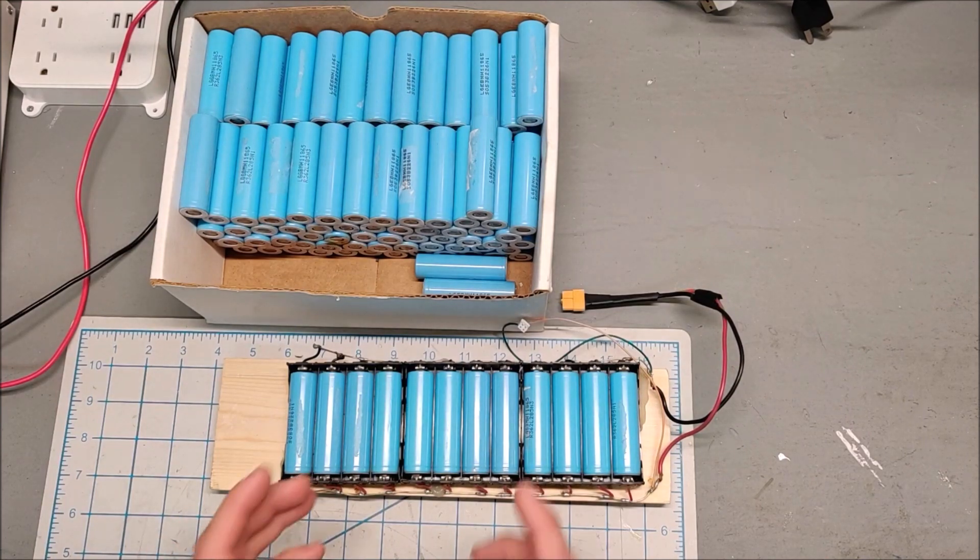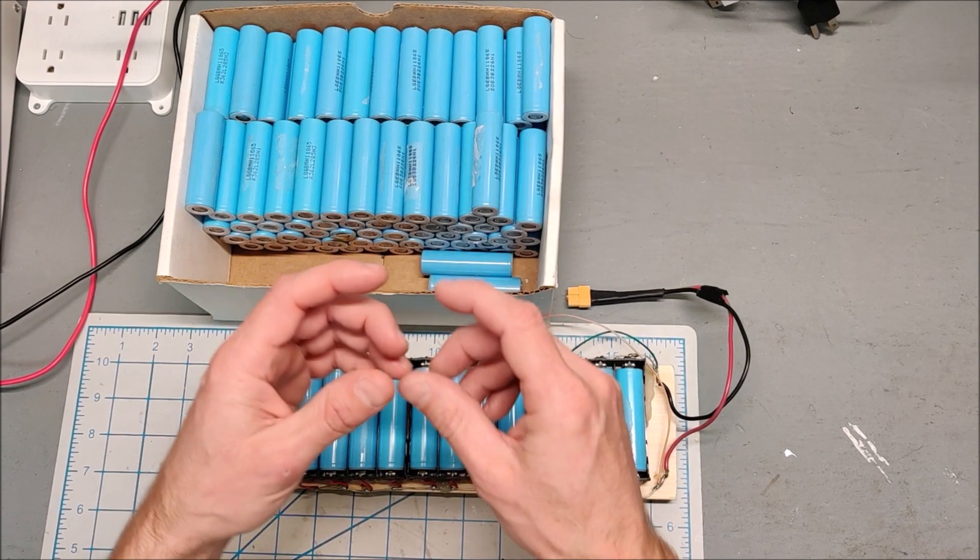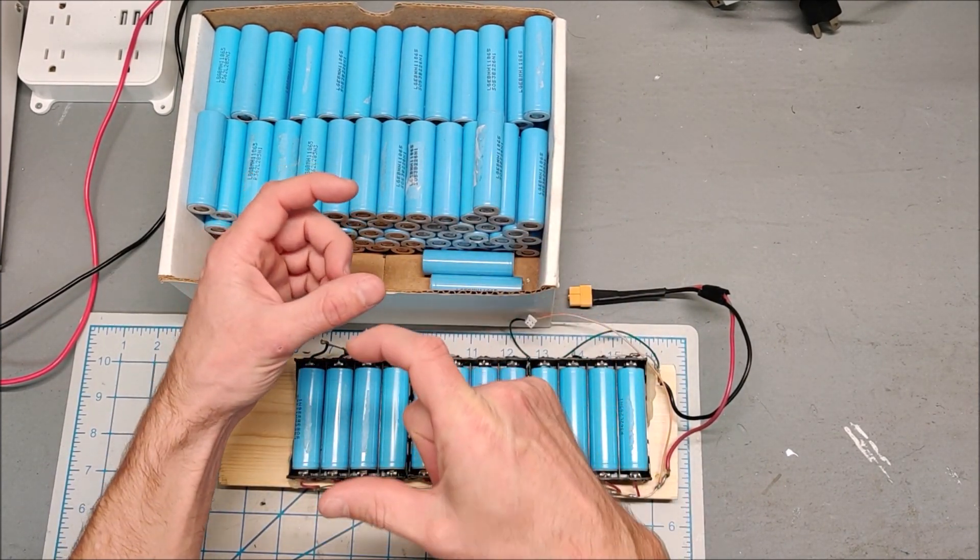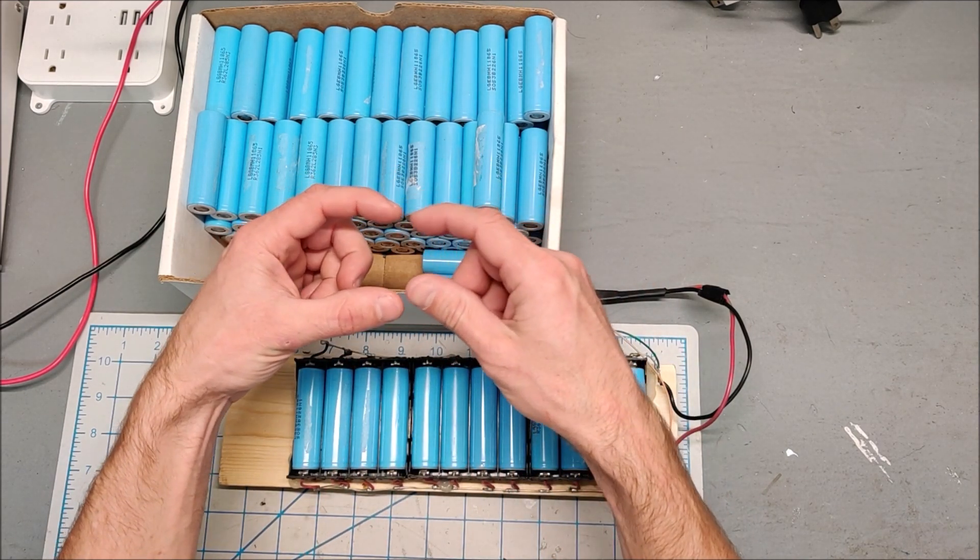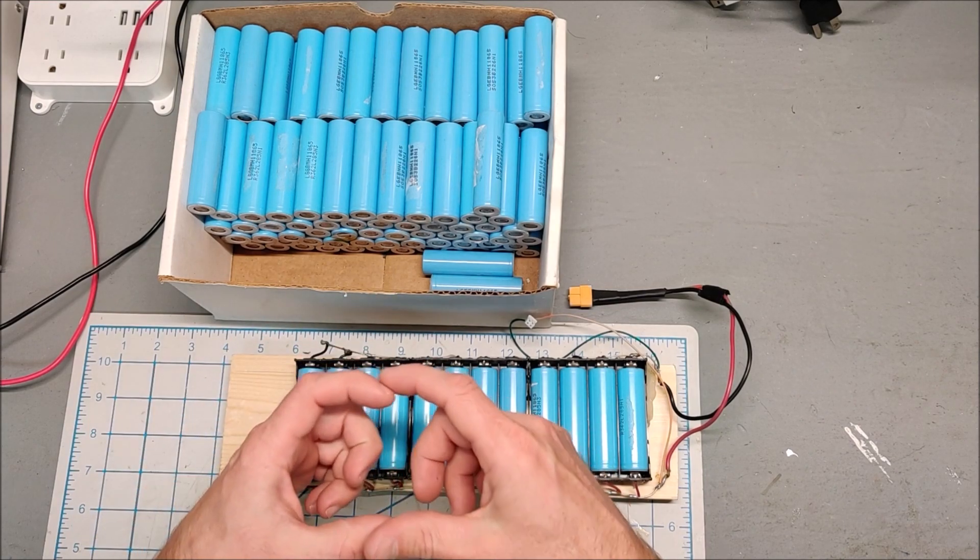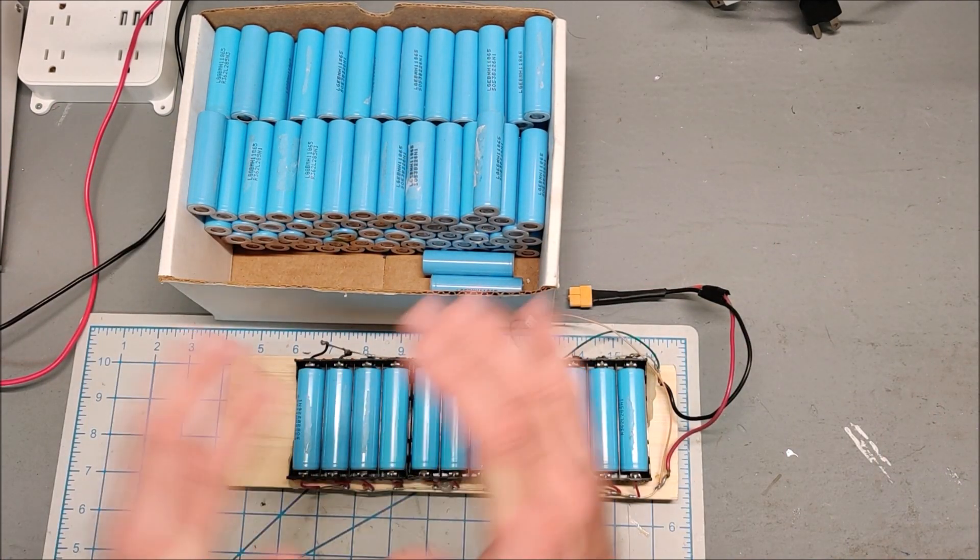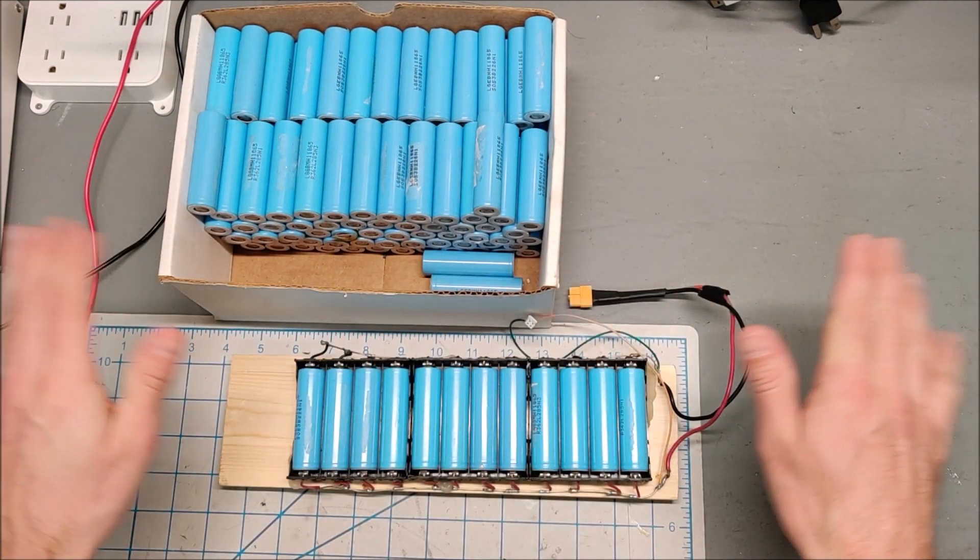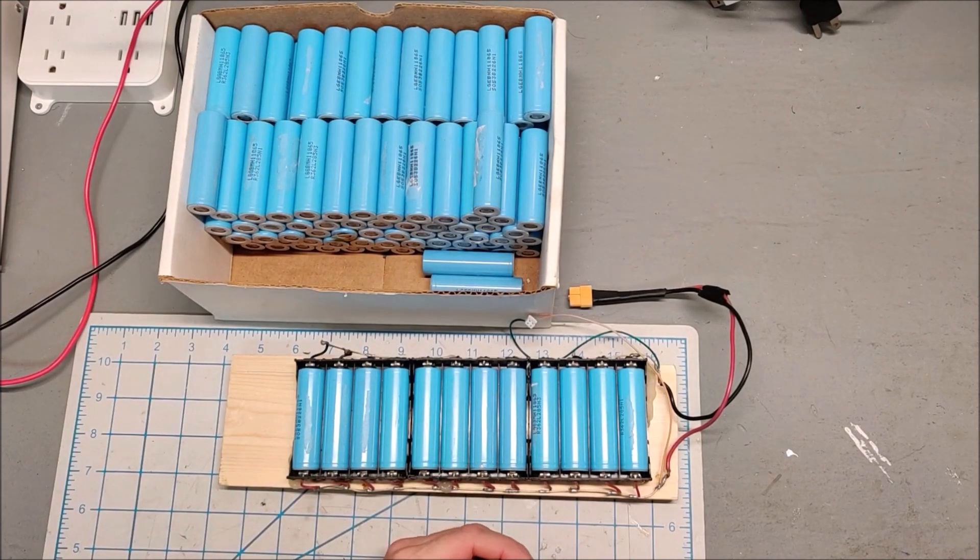I see people build what they call mega-chargers, where they take those TP4056 chips, and they attach one chip to a single 18650 holder, and that single chip charges a single 18650, and they'll put like 20 of them on a board as a way to charge lots of cells. To me, that is so inefficient, and I think there are way better ways to do it.